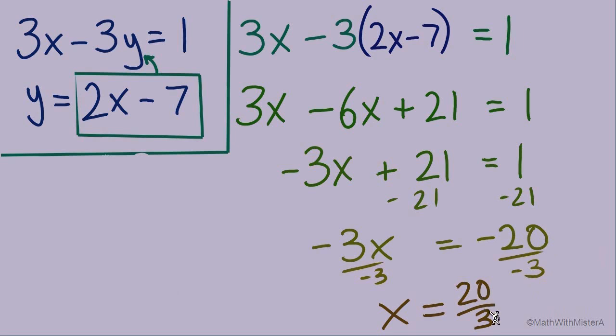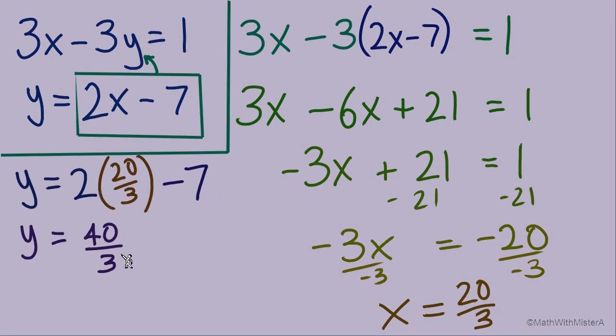So now let's substitute 20 over 3 in place of this x all the way back here. y equals 2 times 20 over 3 minus 7. We've got order of operations. Multiply first, 2 times 20 will make 40 over 3. Now minus 7.